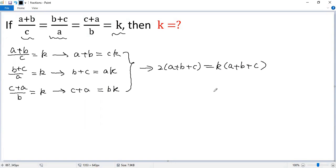At this point, a common mistake would be to cancel a plus b plus c. You get the solution k equals 2, but you miss another solution.